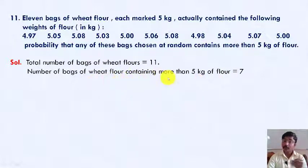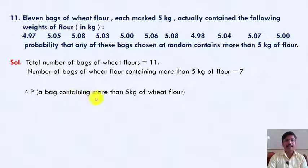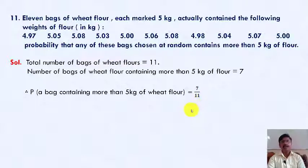Therefore, number of bags of wheat flour containing more than 5 kg of flour is equal to 7 bags. Therefore, probability of a bag containing more than 5 kg of wheat flour is equal to 7 by 11. This is the answer.